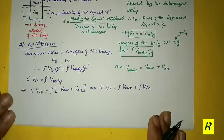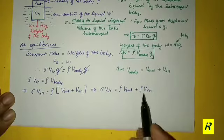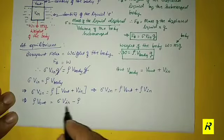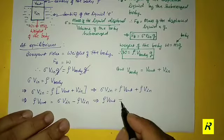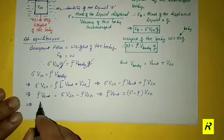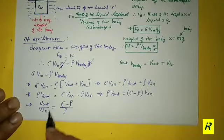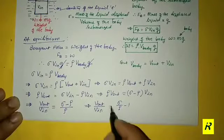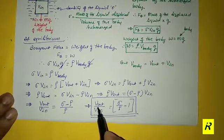Rearranging: ρ·Vout = σ·Vin − ρ·Vin = (σ − ρ)·Vin. Writing the ratio: Vout/Vin = (σ − ρ)/ρ, which can also be written as σ/ρ − 1. This is the answer for the ratio Vout divided by Vin.